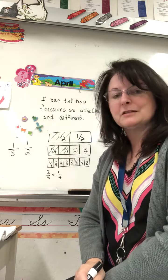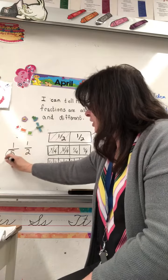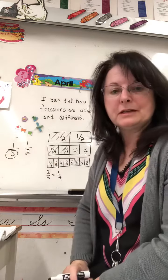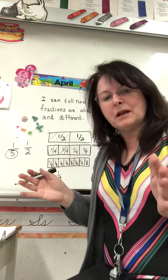Half of that cake is going to be more than one-fifth of the cake. So the trick here is the larger the denominator is, that just means the more pieces something's been cut up to share.